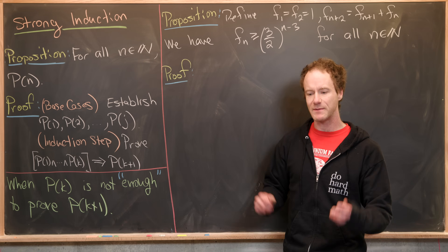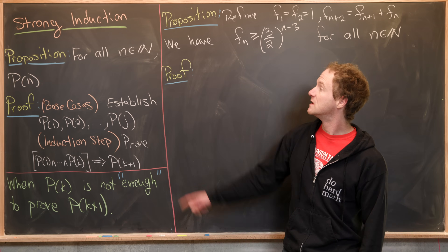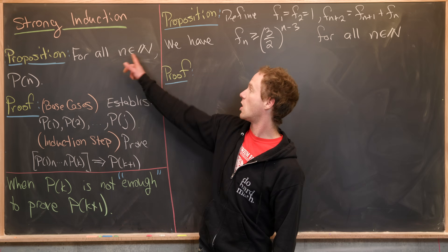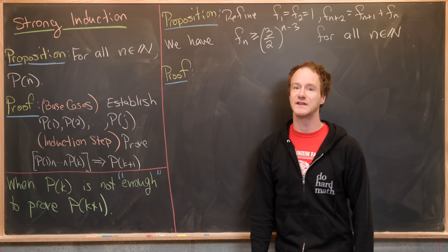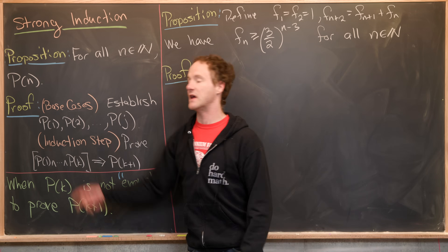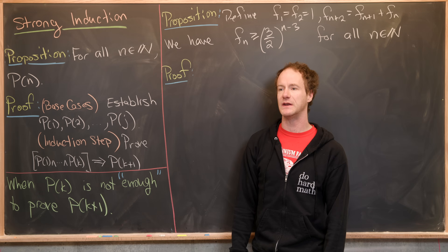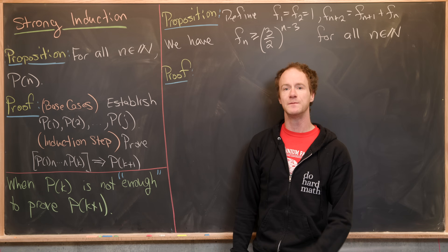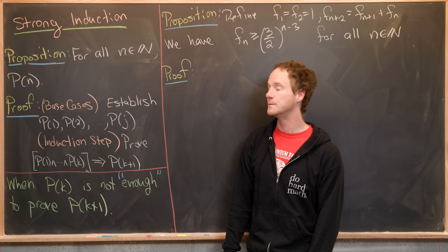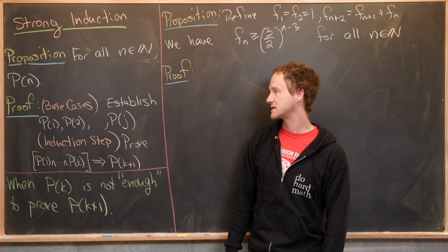Let's see an outline for a proof using strong induction. Say that we want to show for all natural numbers n — or really any discrete indexing set — p of n, where p of n is some mathematical statement depending on n, and we want to show that it is true.